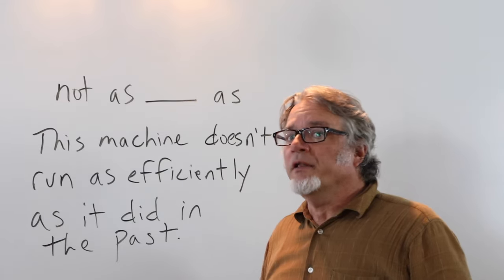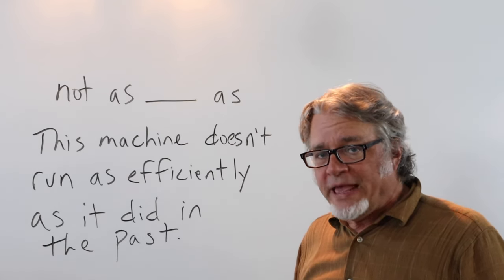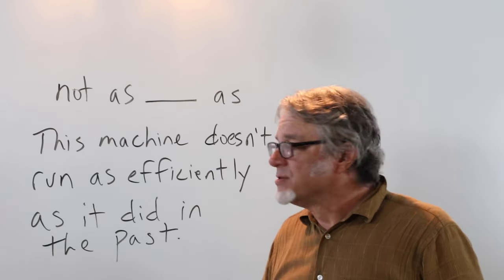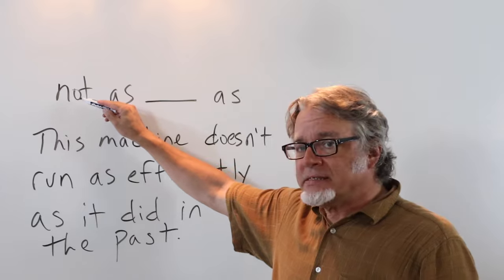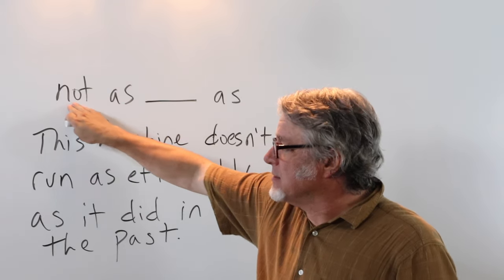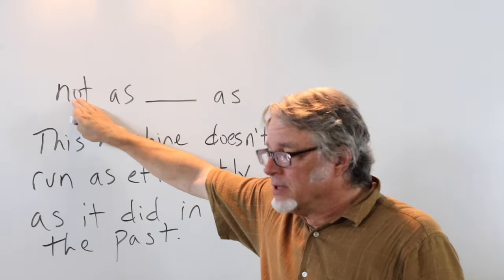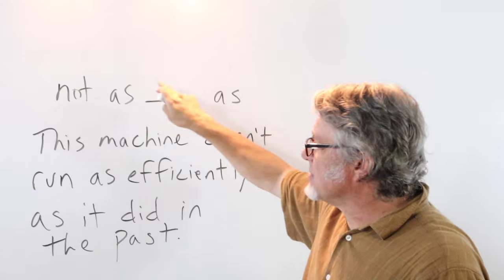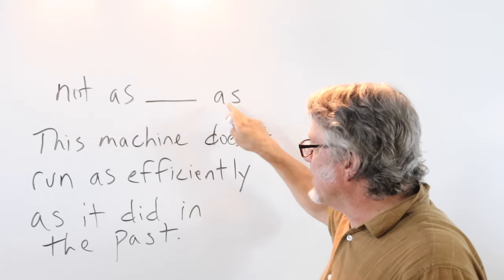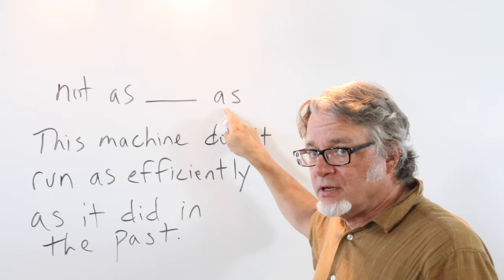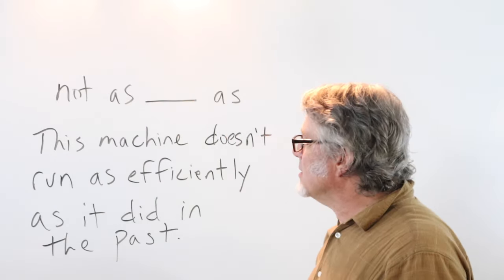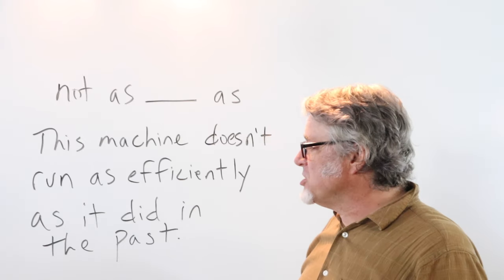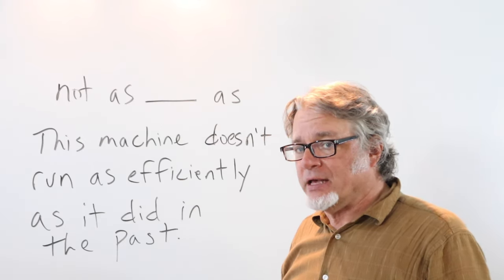Another way to use comparative adverbs is to make a sentence using not. This goes on to the verb. And then as. Here is the adverb. And then here is the word as.